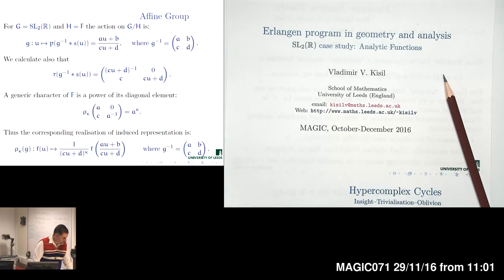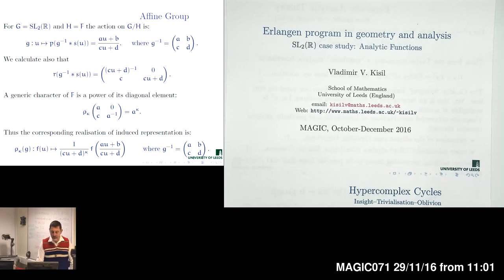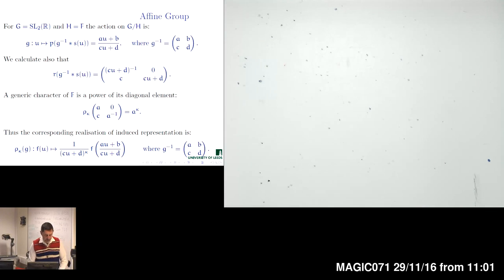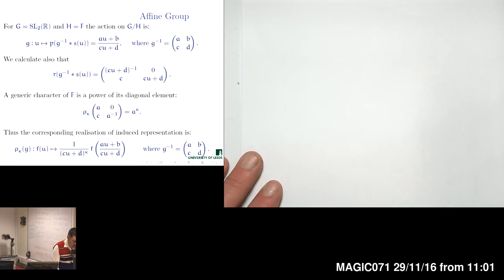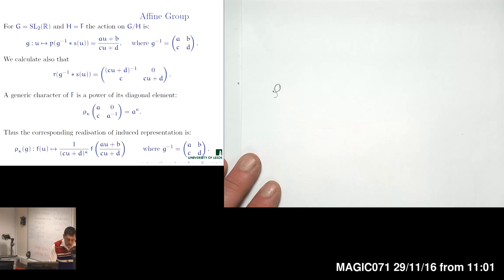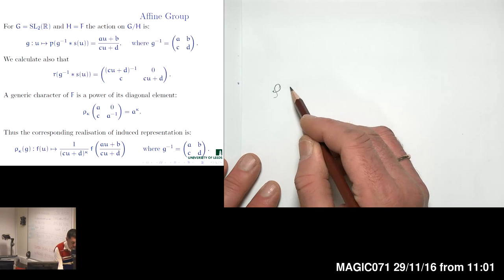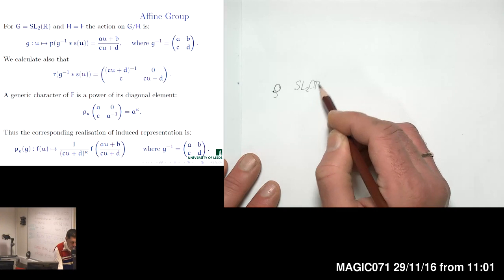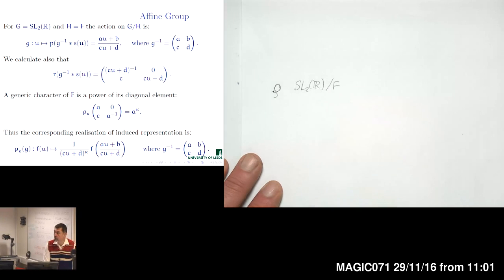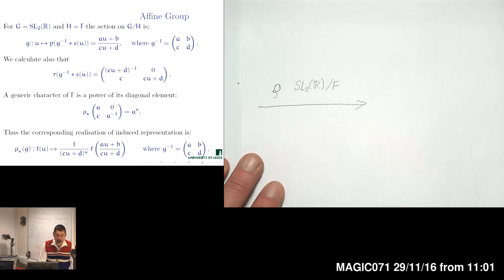Good morning. We want to continue our study of the SL2R group in relation to analytical function theory. It will be good to review the abstract scheme which we have used. We started from a representation of the group SL2R, and that representation acts on functions defined on the homogeneous space SL2R over F, where F is the fine subgroup of SL2R.